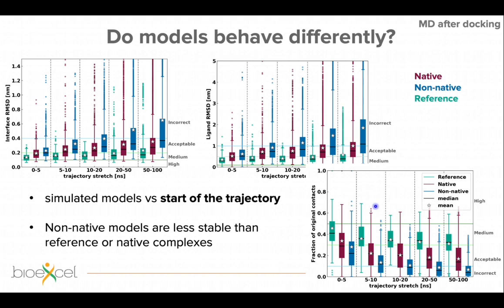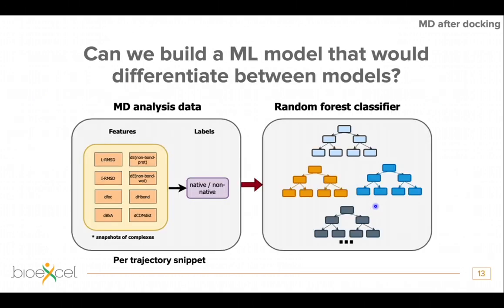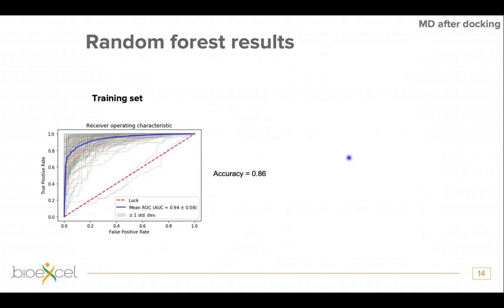This change we didn't really expect, so we thought: let's take these properties and put them into a machine learning classifier. We divided the trajectory into short snippets or stretches, and all properties were treated as features labeled as native or non-native according to the complex they came from. This was fed into a random forest classifier, which was optimized and trained. The random forest consists of many decision trees with additional levels of randomness.